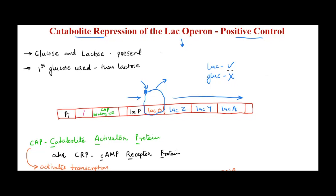Now, this is a scenario where there is no glucose and only lactose is present. But if both glucose and lactose are present, what should a cell do? The smart thing is to first utilize glucose completely, because that is the simplest source available. It need not waste energy breaking down lactose into glucose and galactose when glucose is already present. Only when glucose is depleted should it start breaking down lactose. But how is the operon controlled when both lactose and glucose are present?